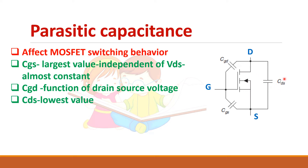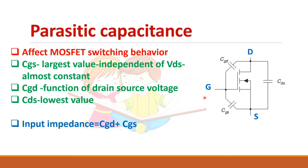The gate-drain capacitance is a function of drain-source voltage and has a small value, which is often neglected. The input impedance of the MOSFET is determined by these two capacitances — gate-source and gate-drain — so when we apply the gate signal, it needs time to charge these capacitors in order to turn the MOSFET on.